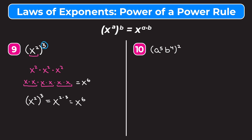For example ten, we have a to the fifth b to the fourth raised to the second power. Each variable is being raised to the second power: a to the fifth raised to the second gives a to the tenth (five times two), and b to the fourth raised to the second gives b to the eighth (four times two). So our answer is a to the tenth times b to the eighth.